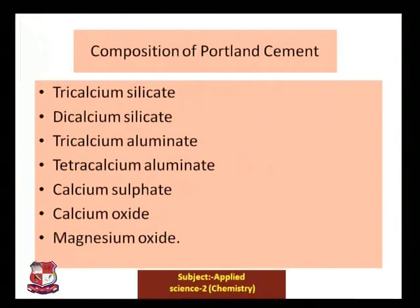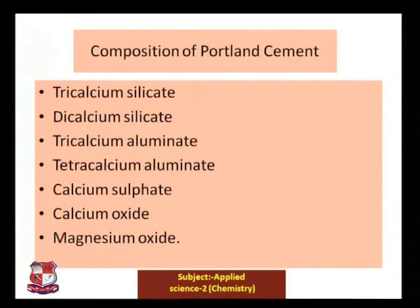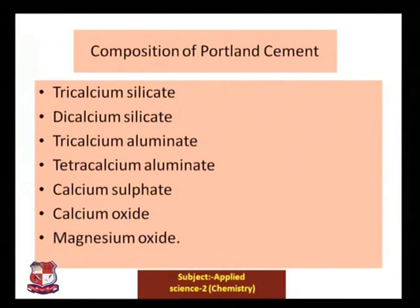Now let us see the composition of Portland Cement. Portland Cement consists of: tricalcium silicate, dicalcium silicate, tricalcium aluminate, tetracalcium aluminate, calcium sulfate, calcium oxide, and magnesium oxide.